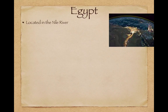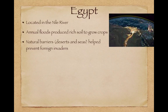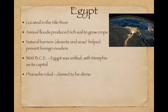You can see a photograph from outer space showing that a good portion of Egypt is still located along the Nile River. Annual floods produced rich soil to grow crops in the Nile River region, and natural barriers — deserts and seas — helped prevent foreign invaders. By 3100 BCE, Egypt was unified with Memphis as its capital.